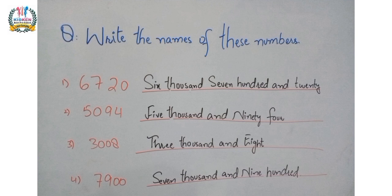Number third part is 3008. Here three has place value thousands, zero has place value hundreds, next zero has place value tens, and eight has place value ones. So we can write these numbers in words: three thousand and eight.